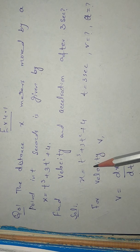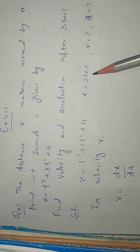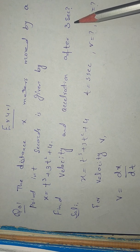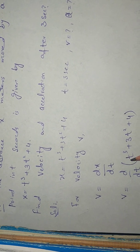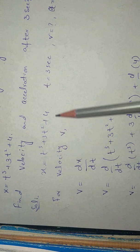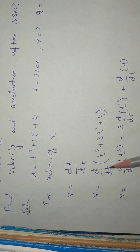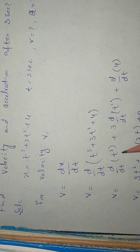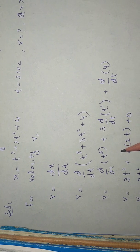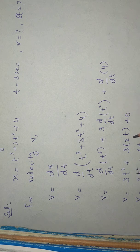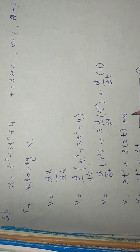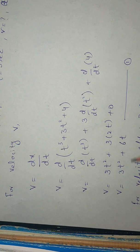We have x equal to t cubed plus 3t squared plus 4, and the time given is three seconds; we have to find velocity and acceleration. For velocity, v equals dx by dt. Applying the derivative to x equal to t cubed plus 3t squared plus 4: by the power rule, the derivative of t cubed is 3t squared, the derivative of 3t squared is 6t, and the derivative of the constant 4 is zero. So after simplifying, velocity equals 3t squared plus 6t.